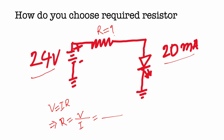Where V equals 24 volt and I we need is 20 milliampere, so R is equal to 1200 ohms, which is like 1.2 kilo ohm. So we need a 1.2 kΩ resistor to draw 20 milliampere current.